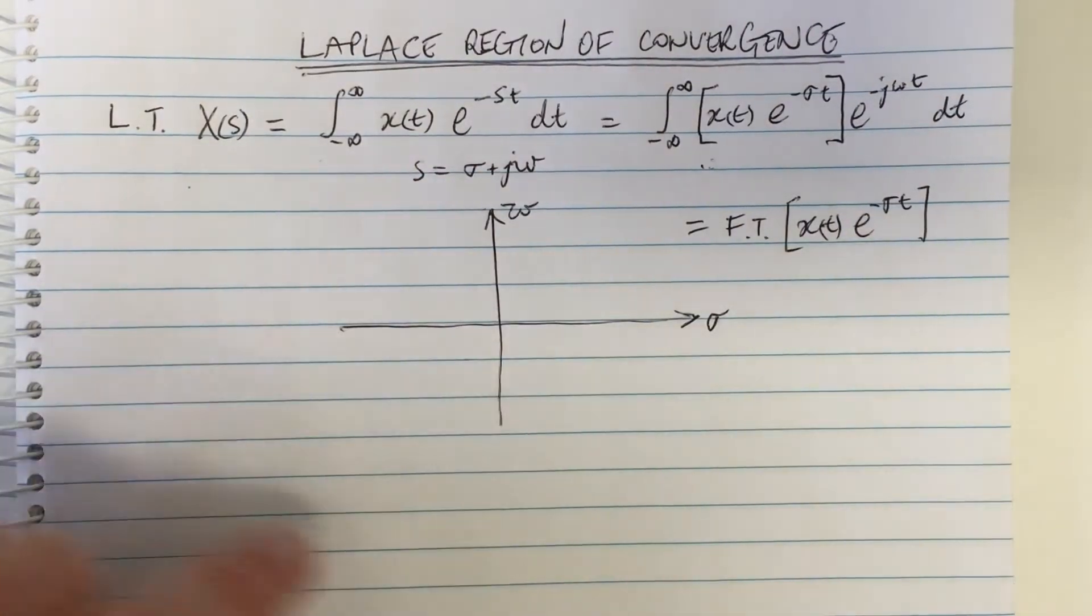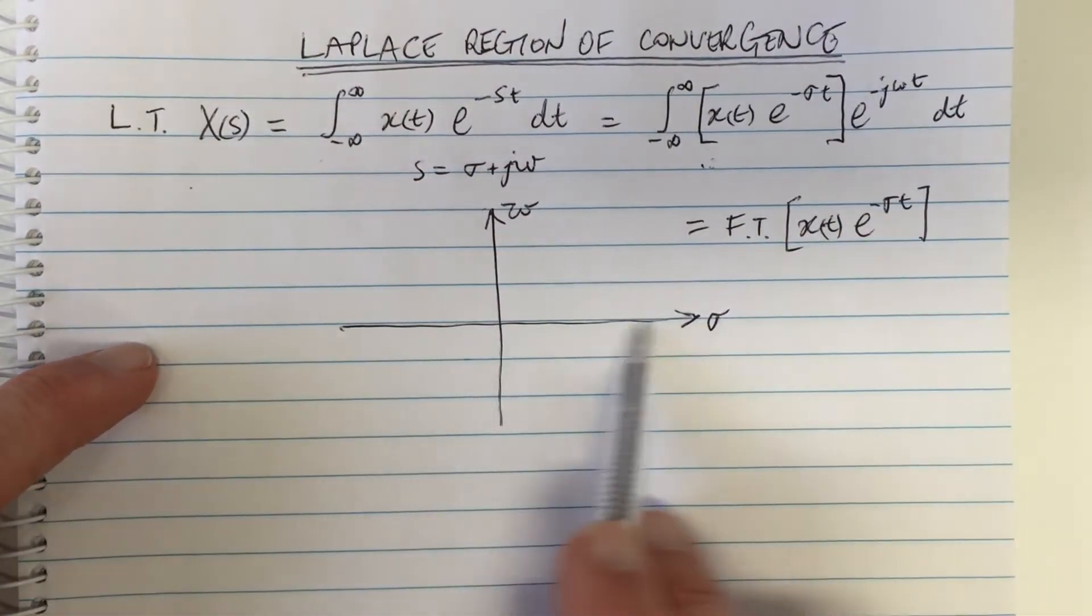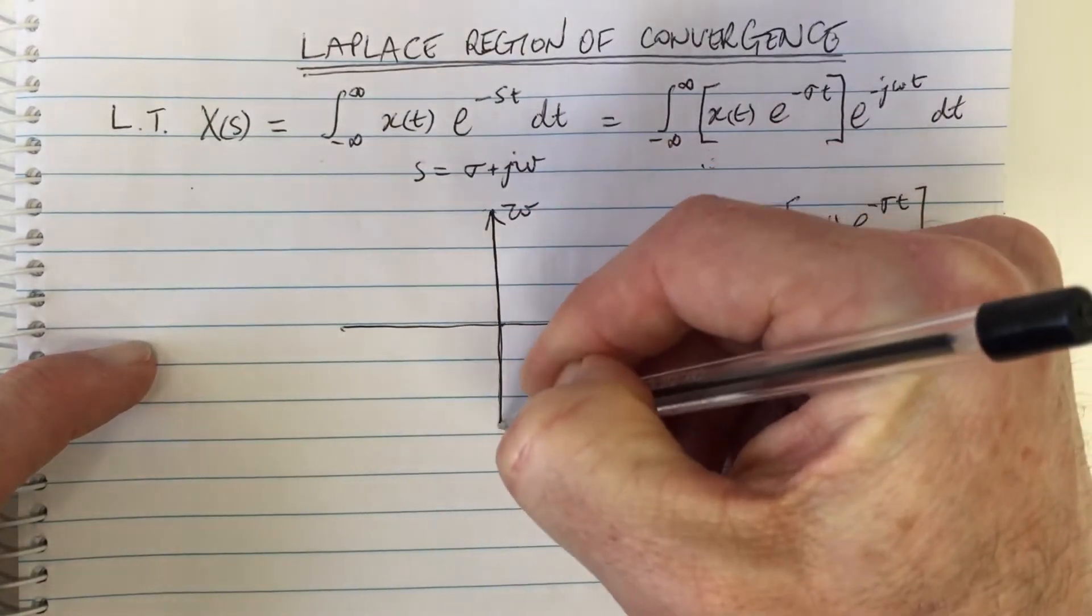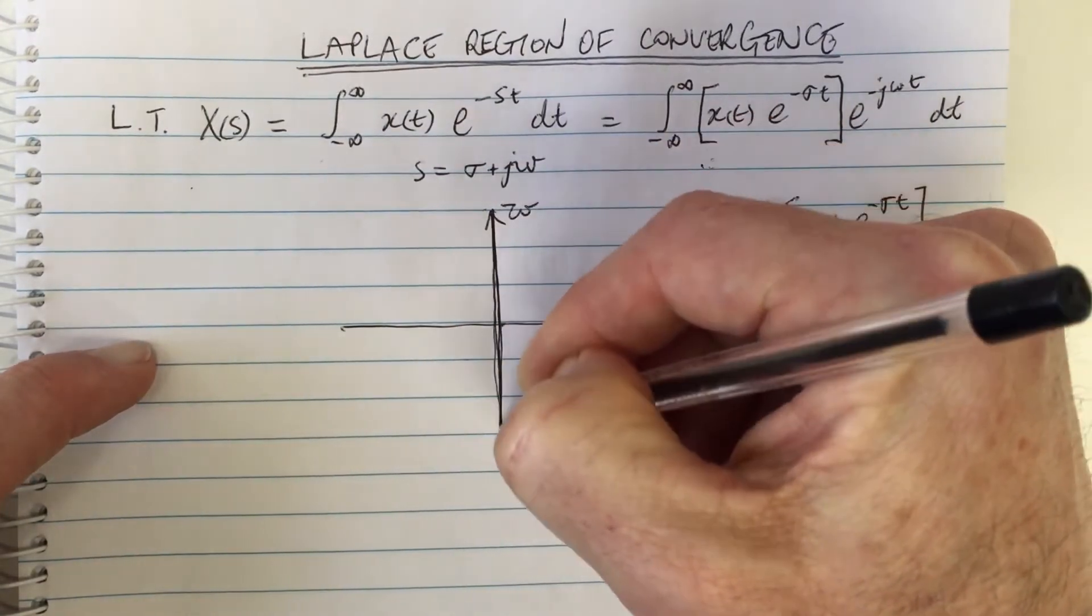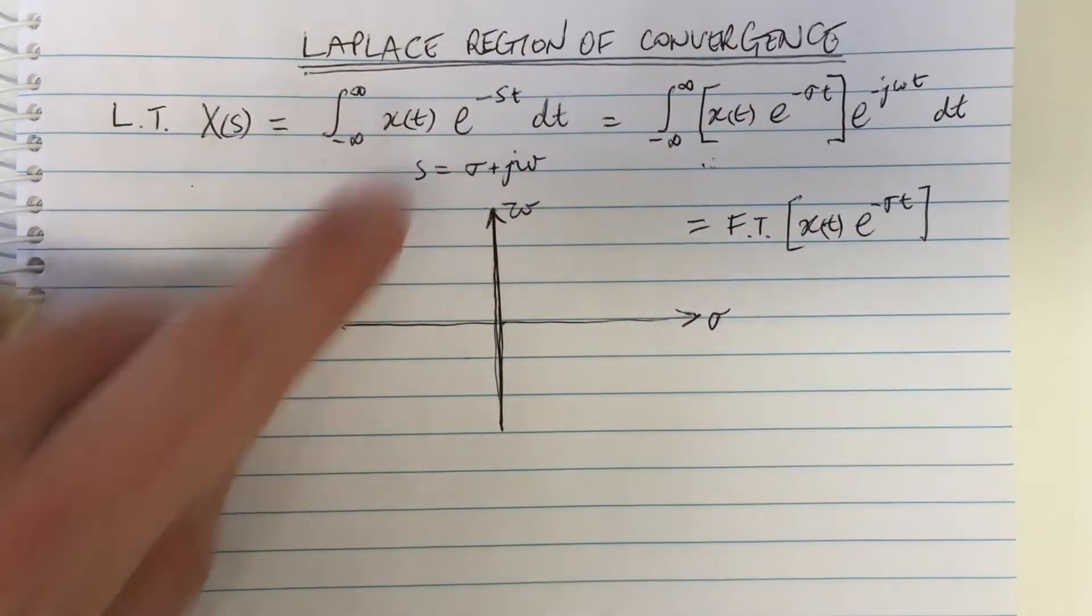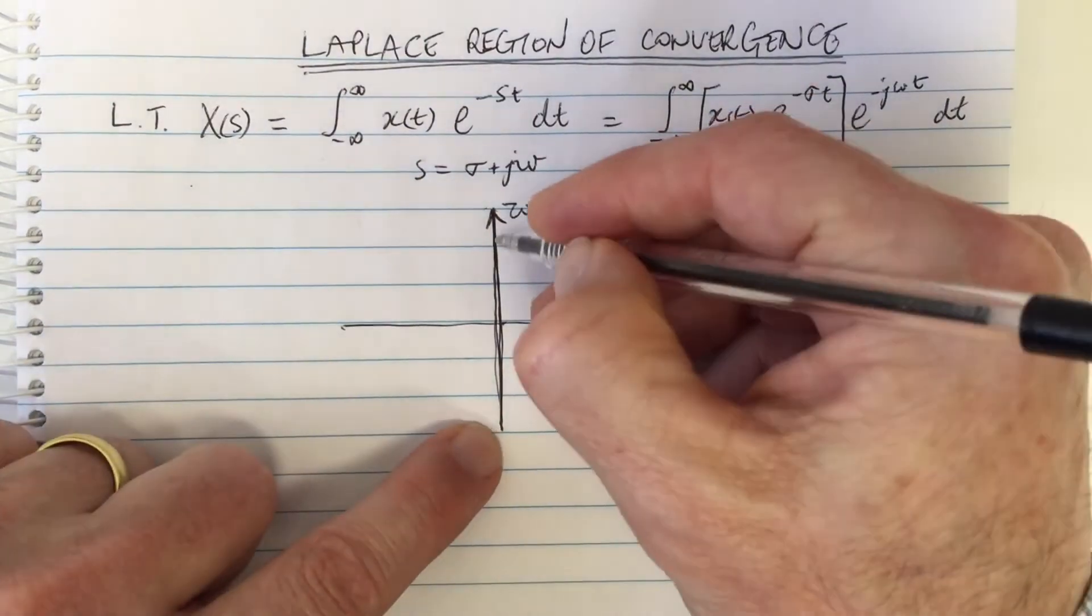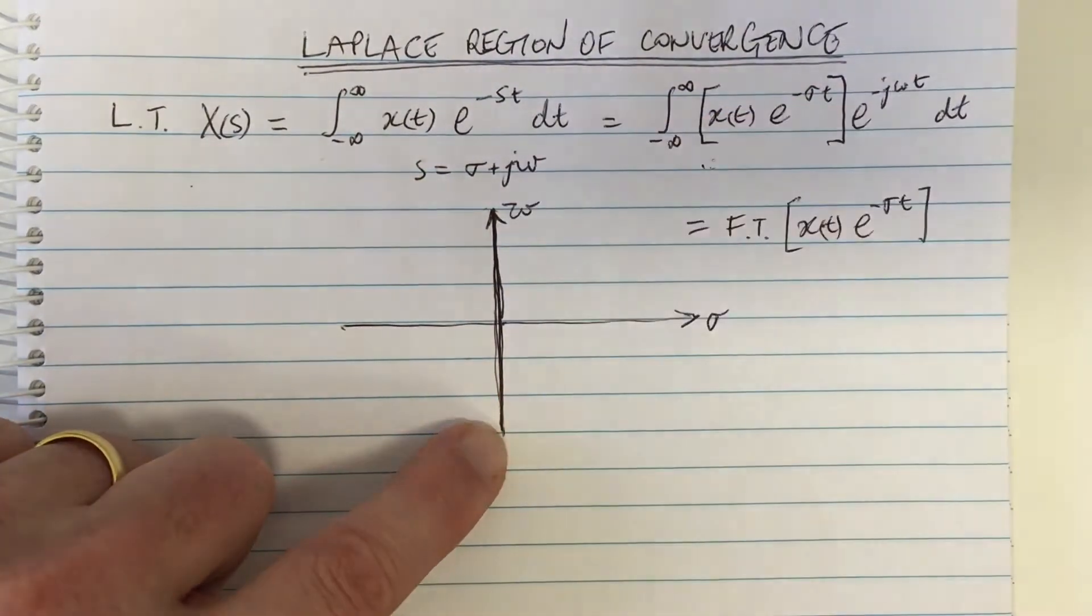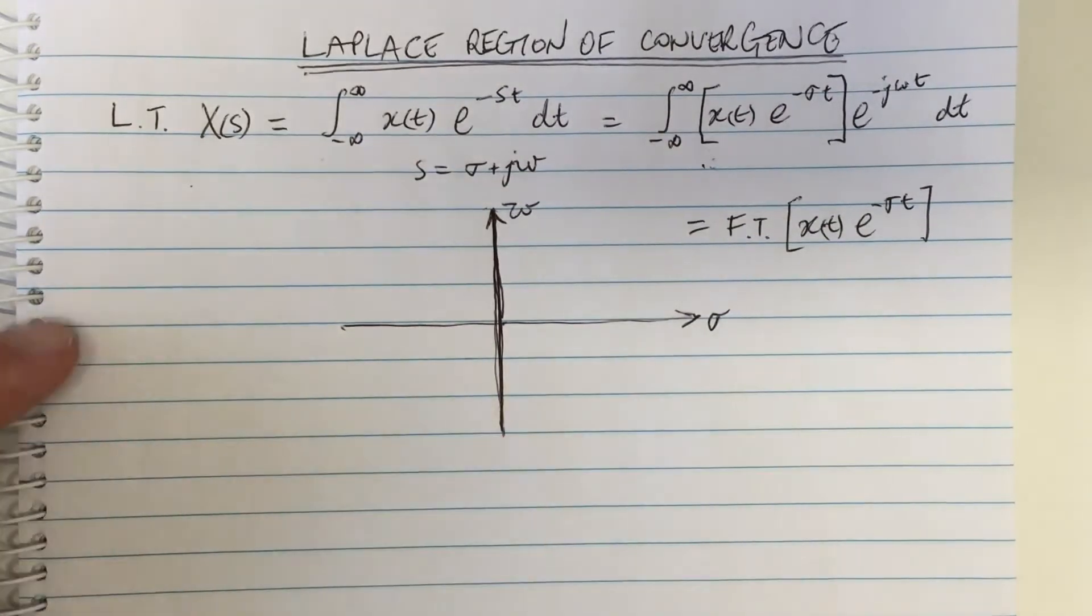So where is sigma equal to zero on this plot? Sigma is this axis, so sigma equals zero is here, so along this axis is the Fourier transform of the signal on this axis. So the Laplace transform is a generalization and it includes the Fourier transform.